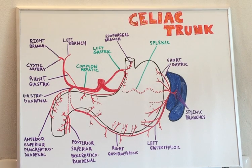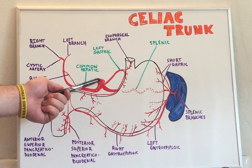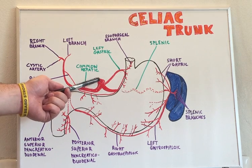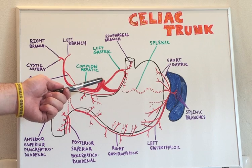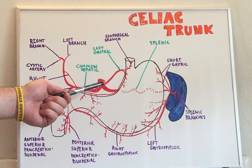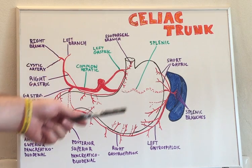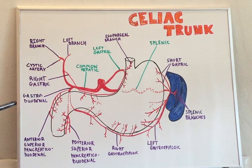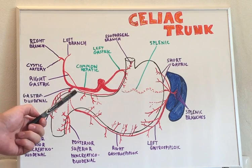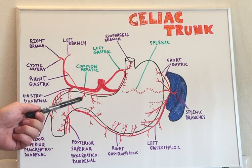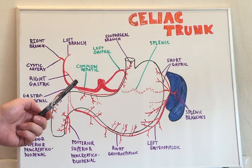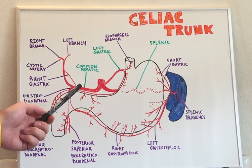Today's lecture is on the celiac trunk. We know that the celiac trunk is a branch off of the descending aorta in the abdominal cavity. As we can see on this diagram, the celiac trunk has a wide variety of branches that come off of it.